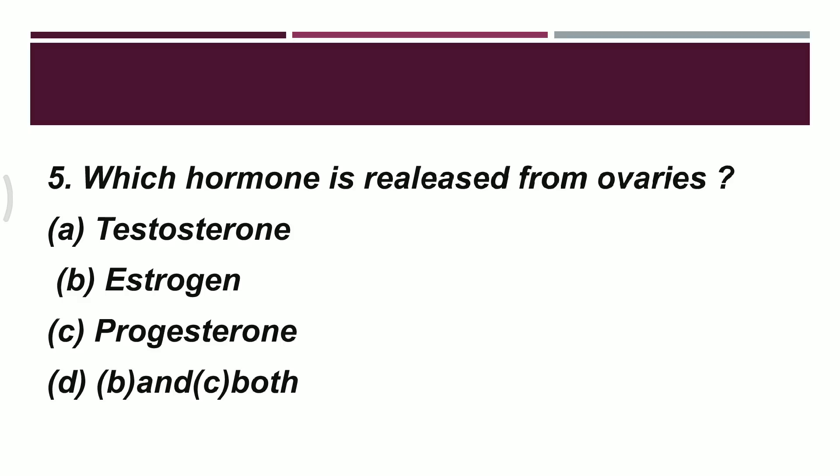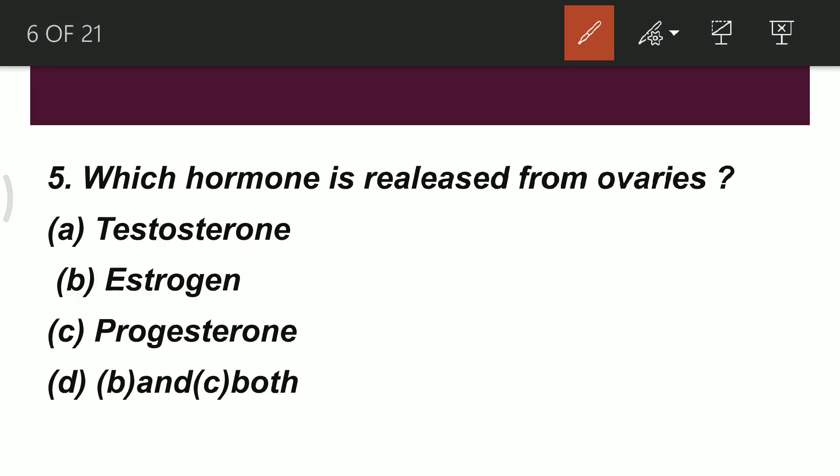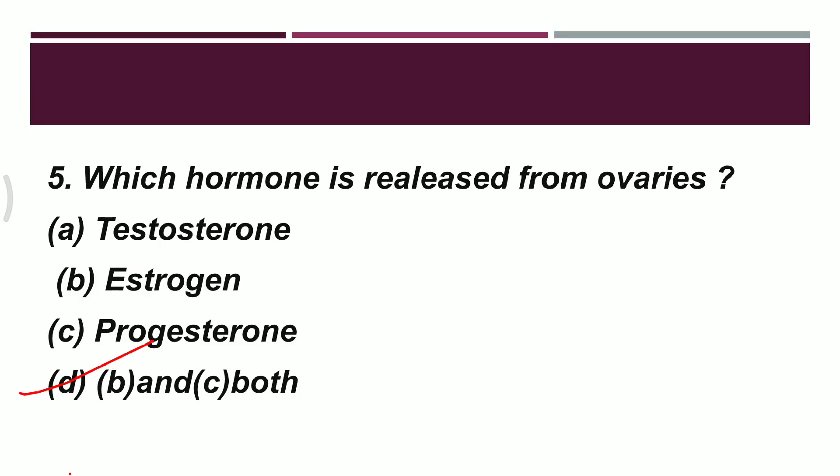Question 5: which hormone is released from the ovaries? Option A: Testosterone. Option B: Estrogen. Option C: Progesterone. Option D: B and C both. The correct option is D — B and C both — meaning both Estrogen and Progesterone are released from the ovaries.